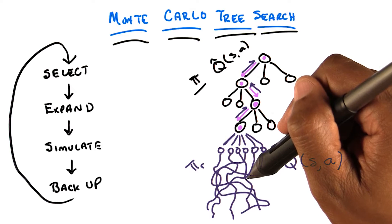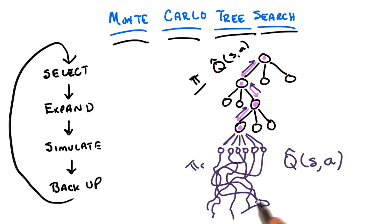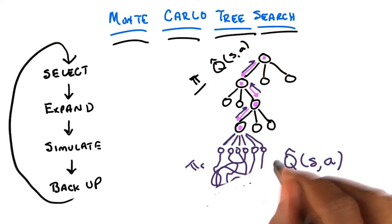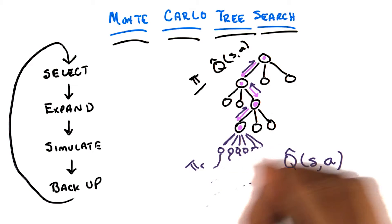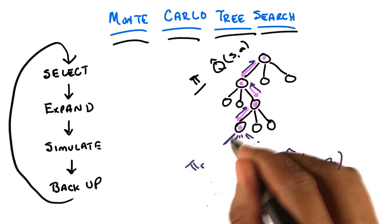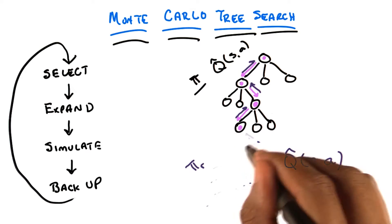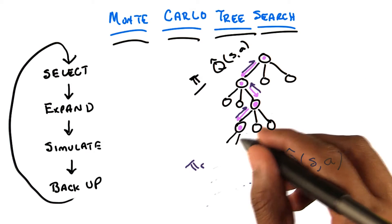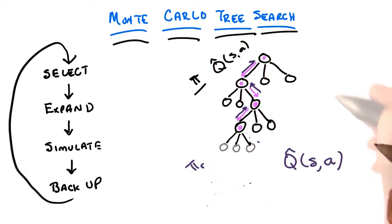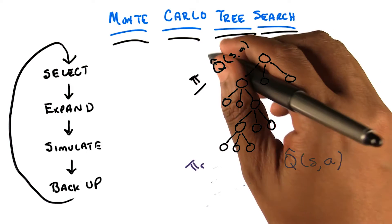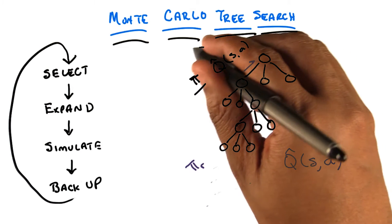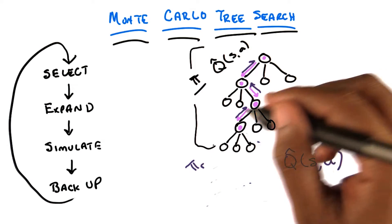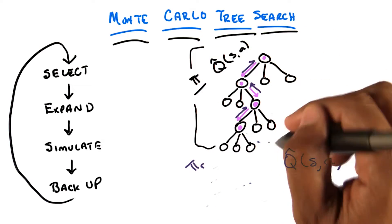Do we now know anything new about the tree? Yes, and in fact, if we did this a very large number of times, we can just say: I know the actions that I can take from this node, and so I feel comfortable expanding my policy all the way down to here, for this particular node as well.